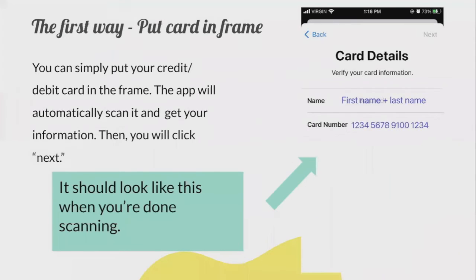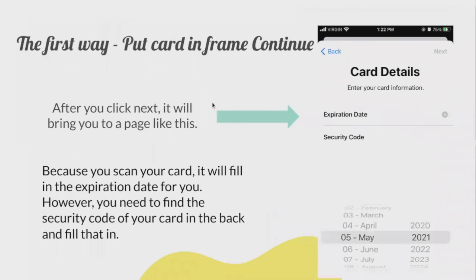Here's a more in-depth look at how to add your card to Apple Wallet. Put your credit or debit card into the camera frame — the app will automatically scan it and retrieve your information. Click Next and you should see the card screen, which will automatically input your first and last name as well as your card number. Look it over to verify it scanned correctly. After clicking Next, it will bring you to a page where the expiration date is filled in for you, but you will need to find the security code on the back of your card and fill it in manually.